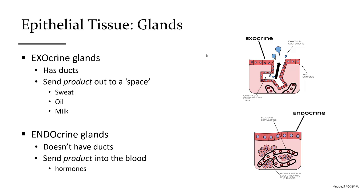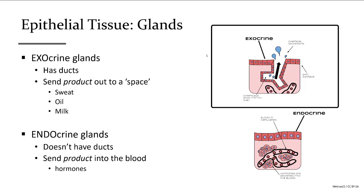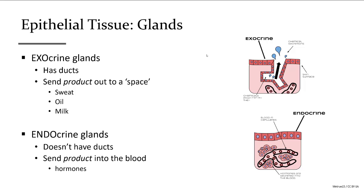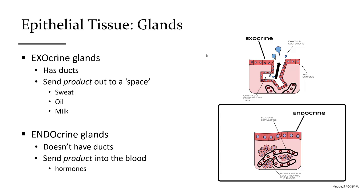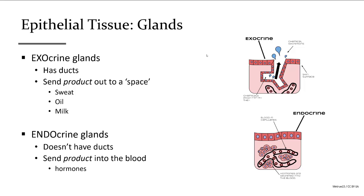The gland component: we have either exocrine glands or endocrine glands. Exocrine — I like to think of EXO as an exit — it has ducts and sends secretions out, like sweat glands onto the surface of your skin, or acid being produced and dropped into the lumen of the stomach. Endocrine glands mean they're staying inside — that's more like our thyroid gland, adrenal gland, or our pancreas, where it's secreting into the blood. Endocrine glands secrete their chemicals into the blood as hormones, and we have a whole chapter dedicated to that.